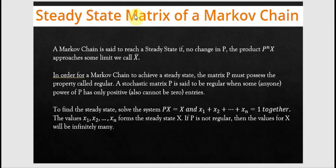A stochastic matrix p is said to be regular when some, any one power of p has only positive entries. The definition really means you don't want to have any zero entries. The zeros are the kickers. To find the steady state, solve the system PX = X and x₁ + x₂ + ... + xₙ = 1 together. The values x₁ to xₙ would form the steady state. If p is not regular, then the values for x will be infinitely many. Let's look at this.